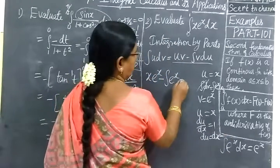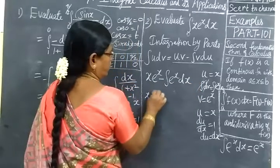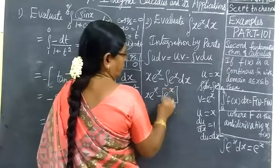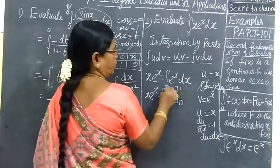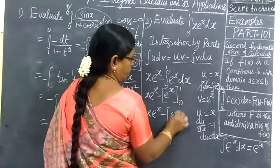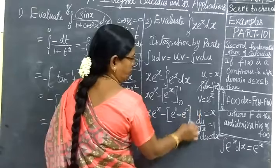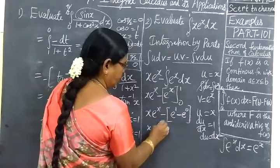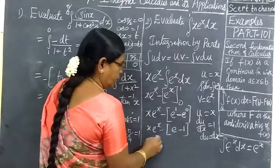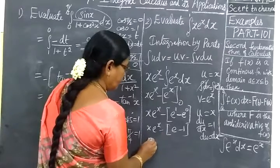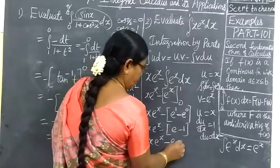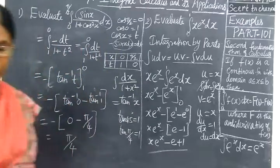So the result is: s times e power s minus e power s, with limits 0 to 1. Applying limits 0 to 1 — upper limit gives 1 times e power 1 minus e power 1; lower limit gives 0 times e power 0 minus e power 0. This simplifies to x times e power x minus e plus 1.